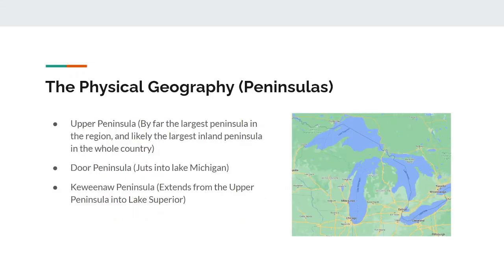Moving onto peninsulas. Normally it would be hard to talk about peninsulas when your region doesn't border the ocean, but luckily for the Midwest, you have the Great Lakes, which are practically inland oceans of their own. The Upper Peninsula of Michigan is arguably the most important and notable peninsula in the region. A lot of people think it's part of Wisconsin, but in reality it's actually part of Michigan. It's the largest inland peninsula in the country and one of the largest inland peninsulas on the planet.